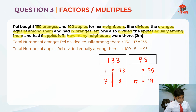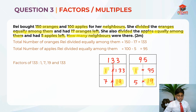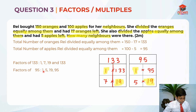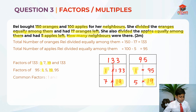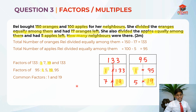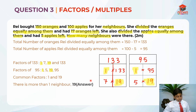Now we highlight the common factors. The factors of 133 are 1, 7, 19, and 133. The factors of 95 are 1, 5, 19, and 95. The common factors are 1 and 19. The common factor is the number of neighbours — is the answer 1 or 19? The answer should be 19, because there's definitely more than one neighbour. So the answer is 19 neighbours.